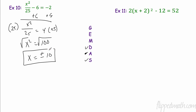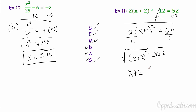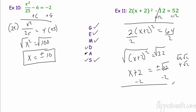Final solving example: 2(x + 2)² − 12 = 52. Add 12 to both sides: 2(x + 2)² = 64. Divide by 2: (x + 2)² = 32. Take the square root: x + 2 = ±√32. Simplify: √32 = √(16 × 2) = 4√2. Subtract 2: x = −2 ± 4√2.